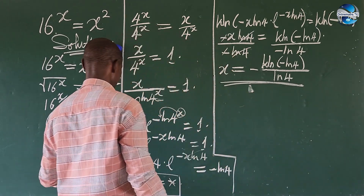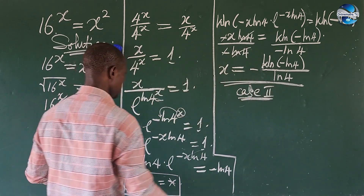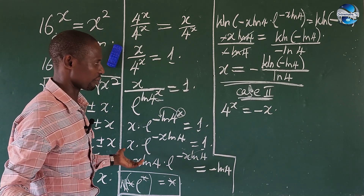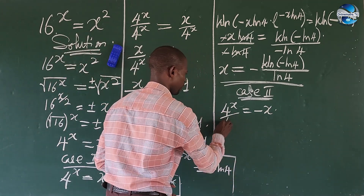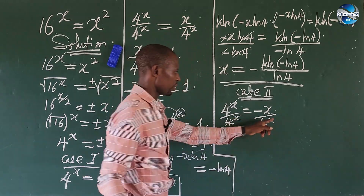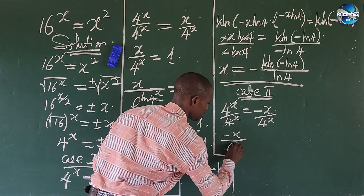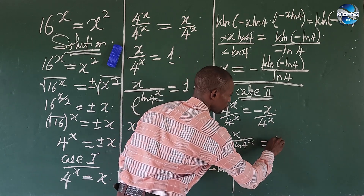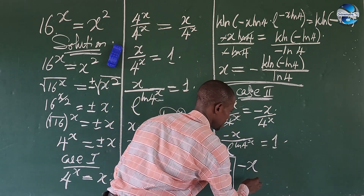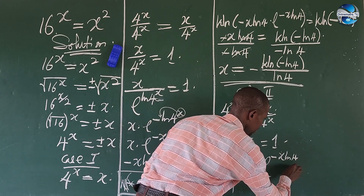Let's go ahead and solve Case 2. Case 2 is the negative one, so we have 4 to the power of x equals minus x. We do a similar thing: divide both sides by 4^x. So we rewrite this as minus x over e to the power of ln(4) all to the power of x, equal to 1. Removing the division sign, this gives us minus x times e to the power of minus x·ln(4) equal to 1.